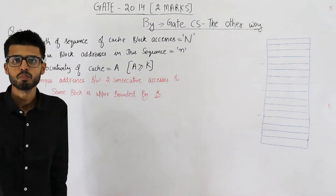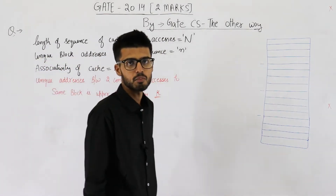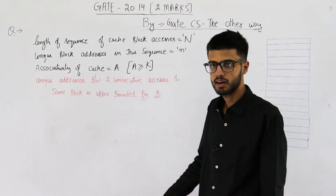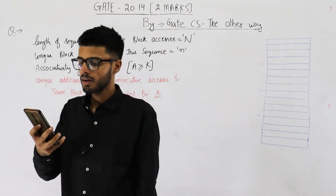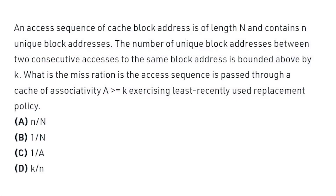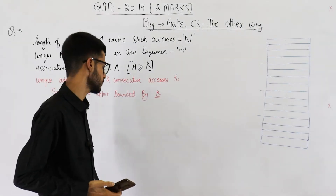Hello students, this question is from the GATE 2014 exam, Set 1. It's a 2-mark question. Let me read out the statement for you. An access sequence of cache block addresses is of length capital N and contains small n unique block addresses. The number of unique block addresses between two consecutive accesses to the same block address is bounded above by K. What is the miss ratio if the access sequence is passed through a cache of associativity A greater than or equal to K, exercising least recently used replacement policy?